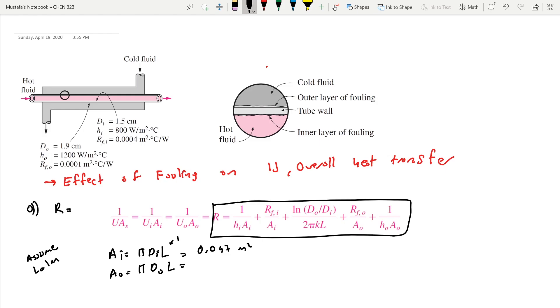So we have h right now, we have Ai which we just calculated, and Ao which we just calculated. Resistance inner is given, resistance outer is given. We know the inner and outer diameters, so we know these two.